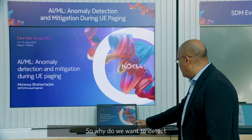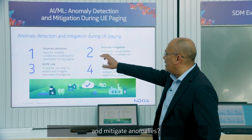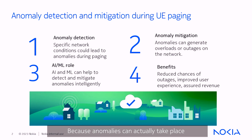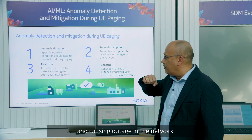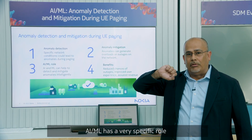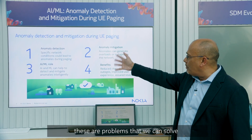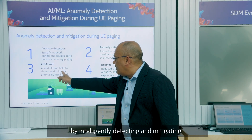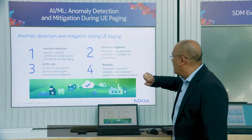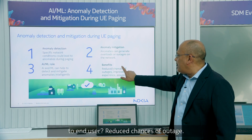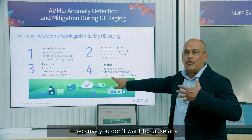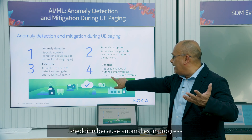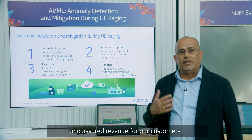So why do we want to detect and mitigate anomalies? Because anomalies can actually take place because of certain conditions in the network, and these anomalies can actually end up overloading and causing outage in the network. AIML has a very specific role here — these are problems we can solve by intelligently detecting and mitigating anomalies using AIML. The benefits to the end user are reduced chances of outage, improved user experience, and assured revenue for our customers.